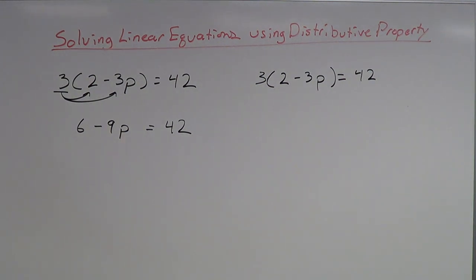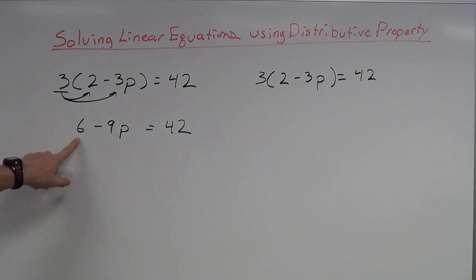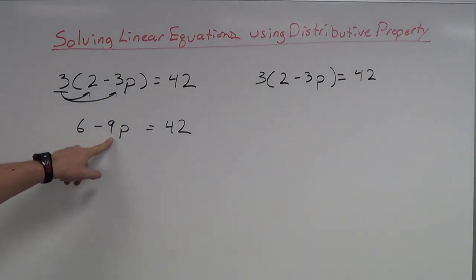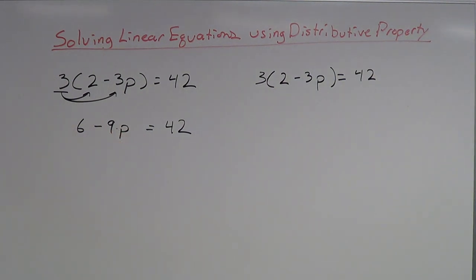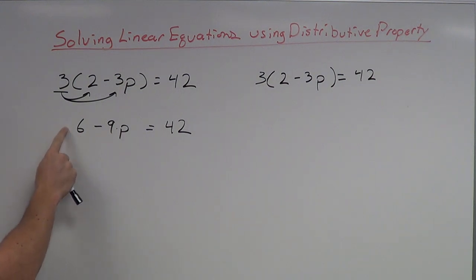When solving equations, one way is to do the opposite of your order of operations. I see a plus 6 and a times by negative 9, so you want to do the opposite — do your adding and subtracting first and then your multiplying and dividing. That tells me I want to get rid of this 6 first and then get rid of the negative 9. To get rid of this positive 6, I want to subtract 6 from both sides.